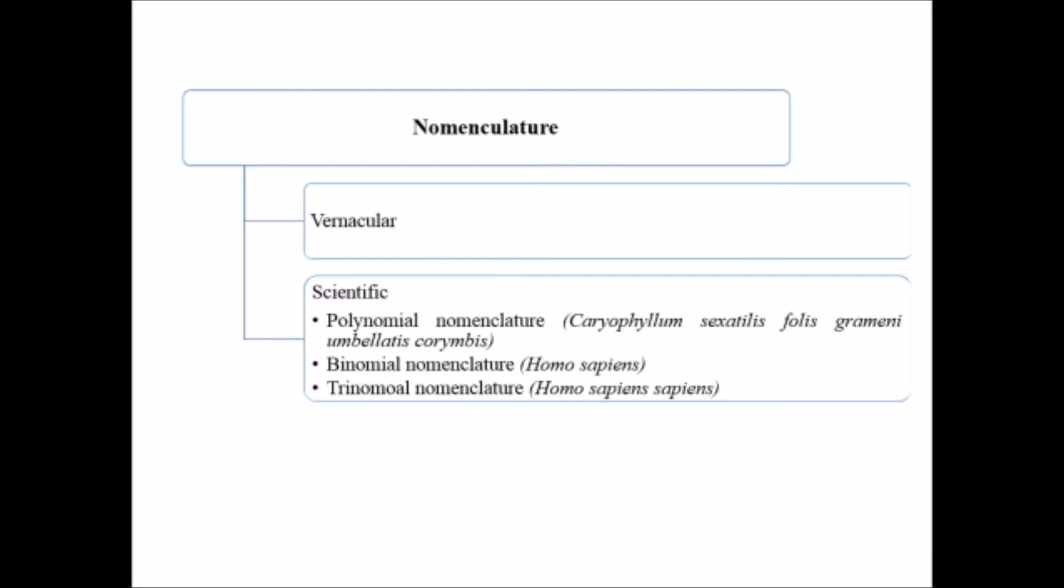If one names a certain organism by, I suppose, A, then this will be pronounced as B in some other region. So this was very difficult for studying the organism. So there comes the scientific naming system.